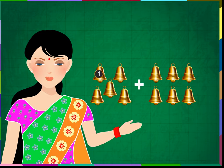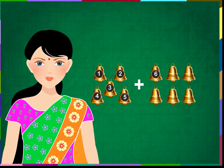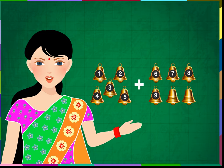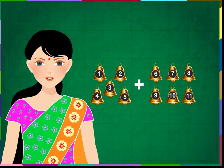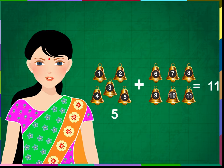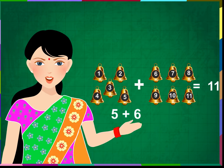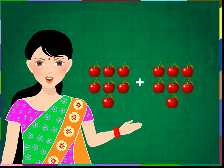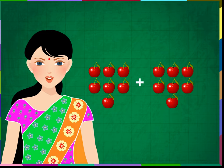Let us count the bells and add. Counting: 1, 2, 3, 4, 5, 6, 7, 8, 9, 10, 11. Five bells and six bells make 11 bells. Five plus six is equal to 11. Count the cherries and write the sum.